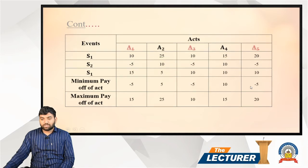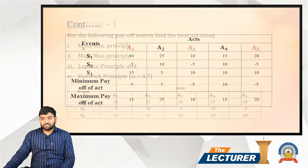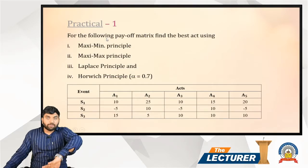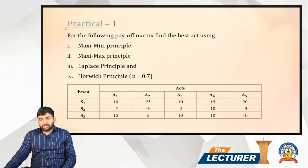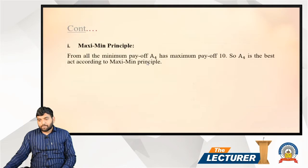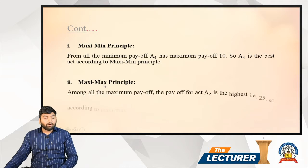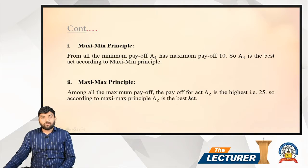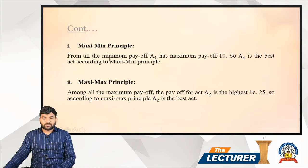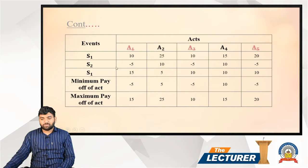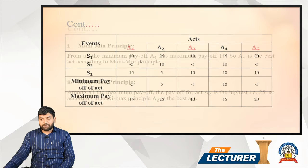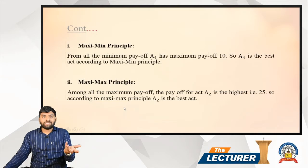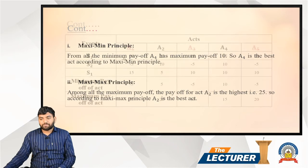According to the Maximax principle, among all the maximum payoffs, the payoff for act a2 is the highest — that is 25. So according to the Maximax principle, a2 is the best act. The maximum payoff of 25 gives the best action under the Maximax principle.